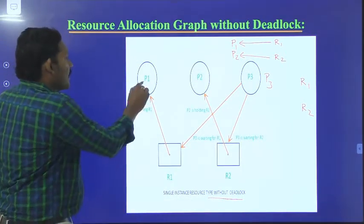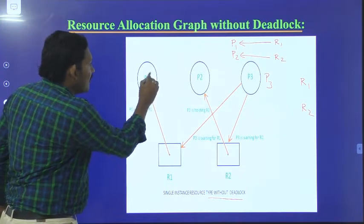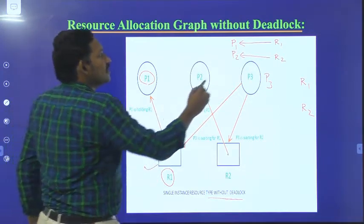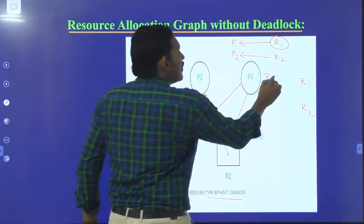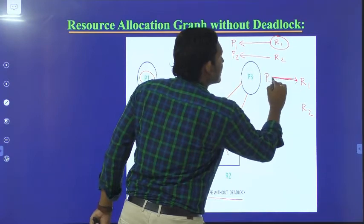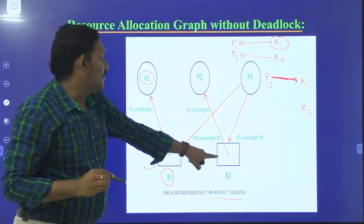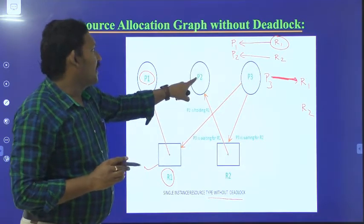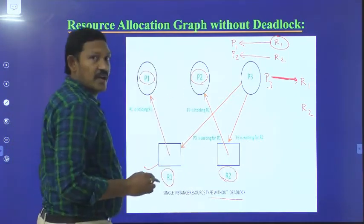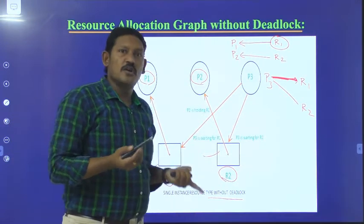In this example, P1 is not waiting for anything — P1 is only holding resource R1. After completion, R1 will be released. When R1 is released, P3 will hold R1. Similarly, R2 is being held by P2, and P2 is not waiting for any other resource. So as soon as execution is over, P2 will release R2, and P3 will hold resource R2. There is no point of deadlock here.